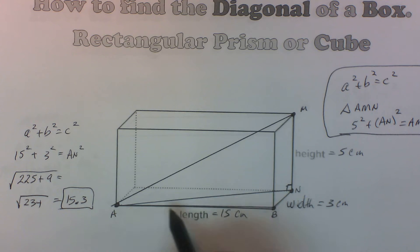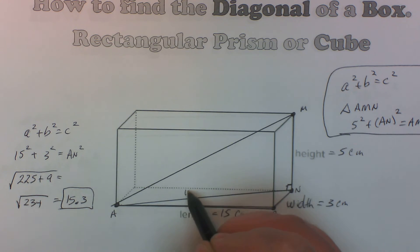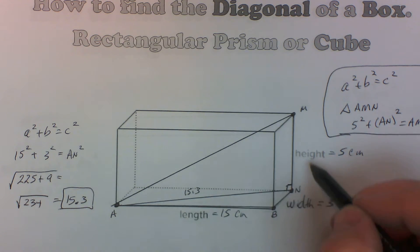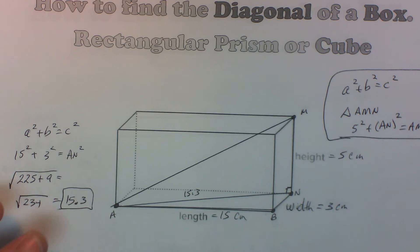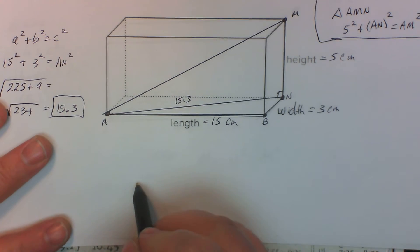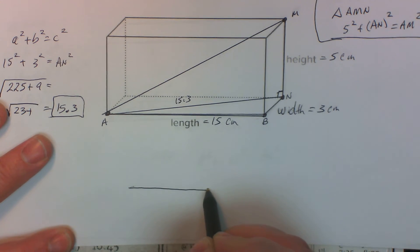So what I know now, that this distance right here is 15.3. I know this one's 5. So if I were to draw that triangle, this is what we'd have right here.